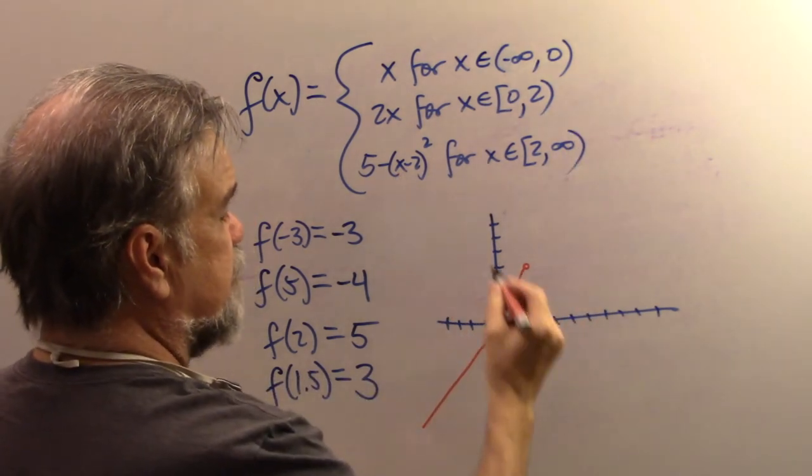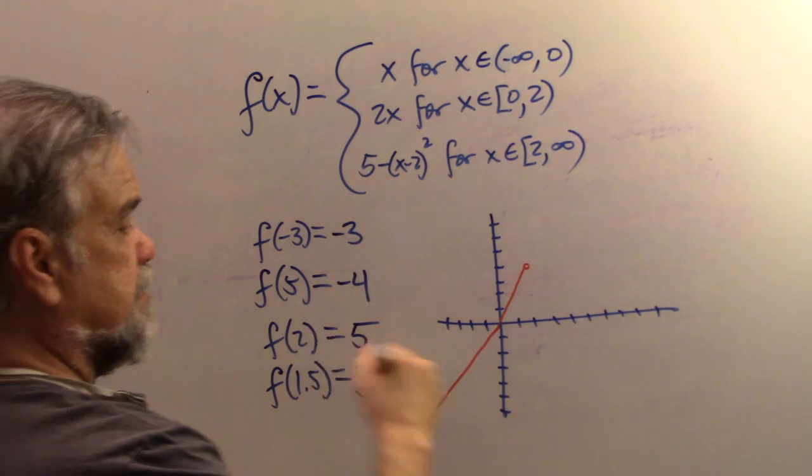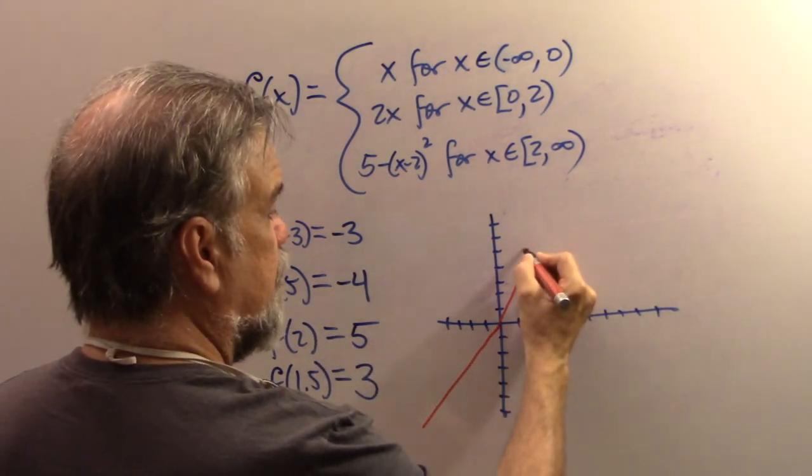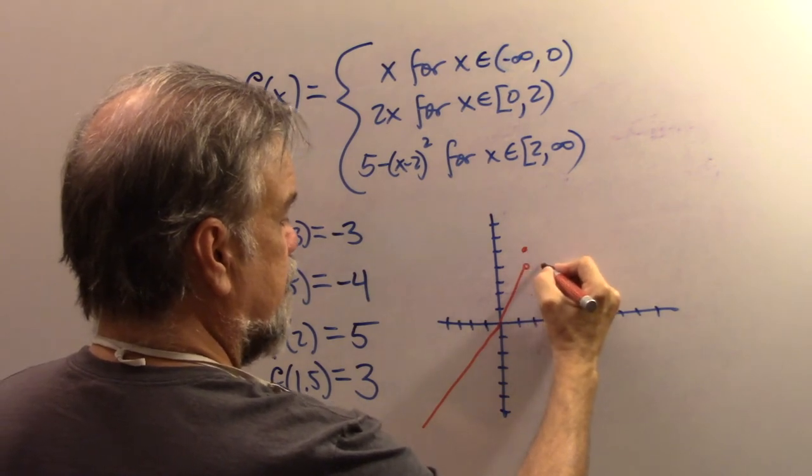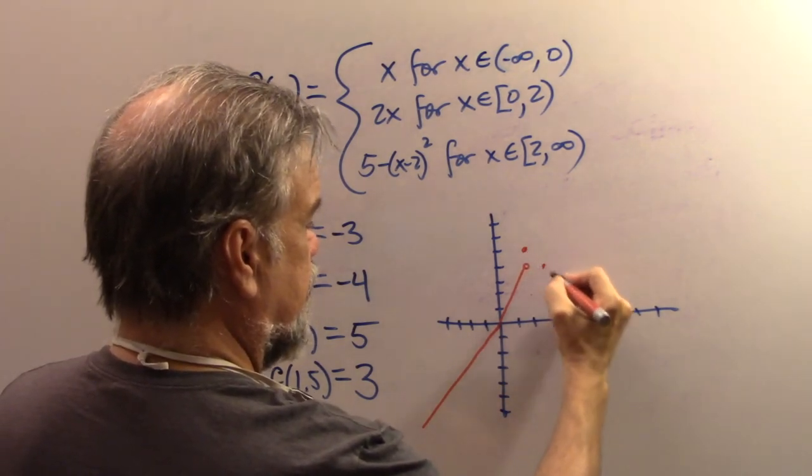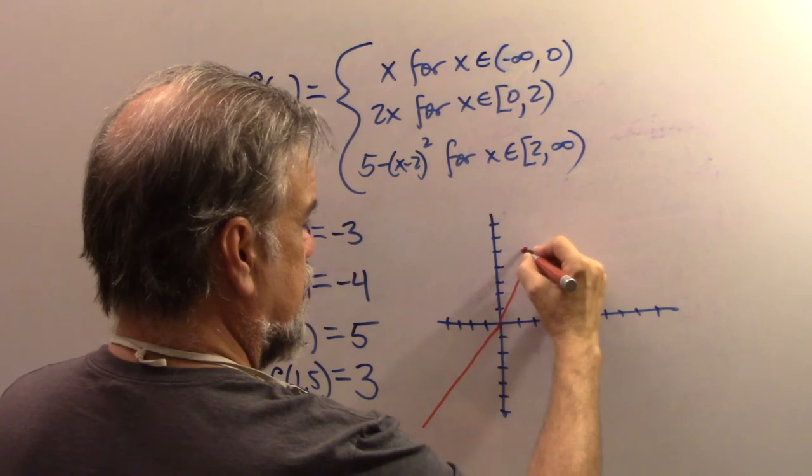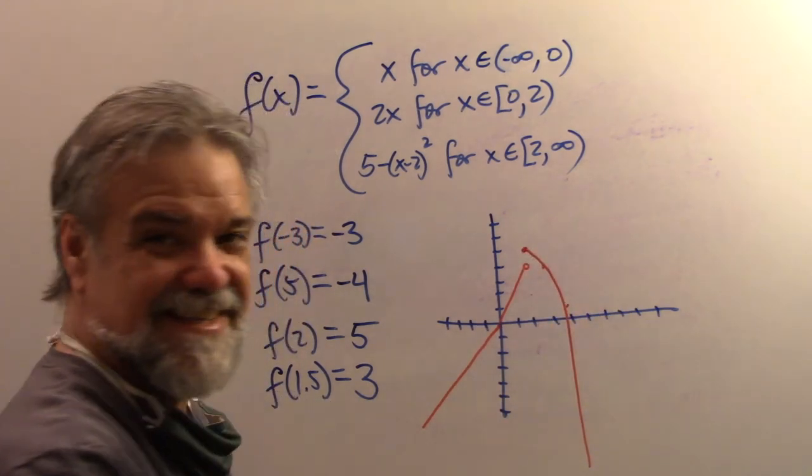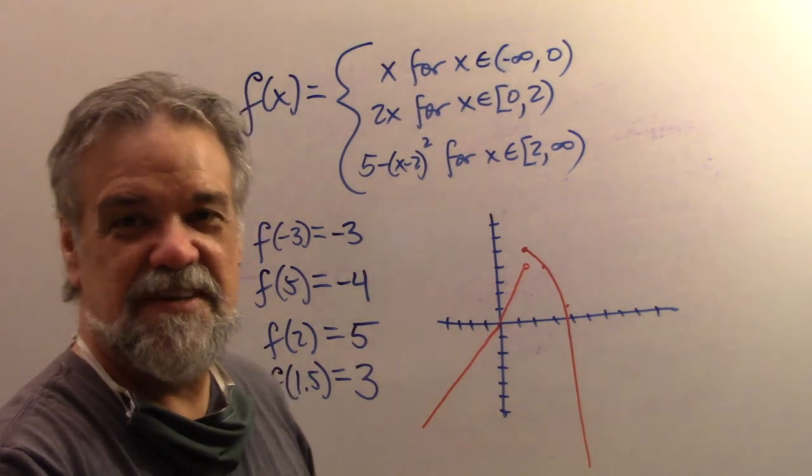And at two, as we saw, F of two is five. So actually I'm going to go two, one, two, three, four, five, put a point there. And then I'm going to go like this. It's going to be a, that's not a very good parabola, but you get the idea.